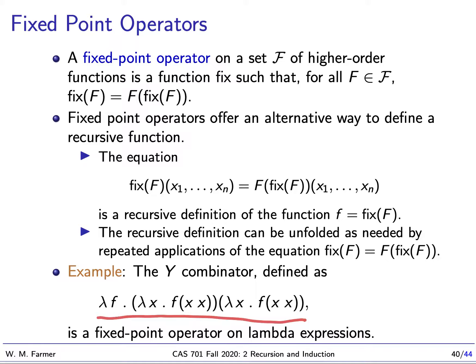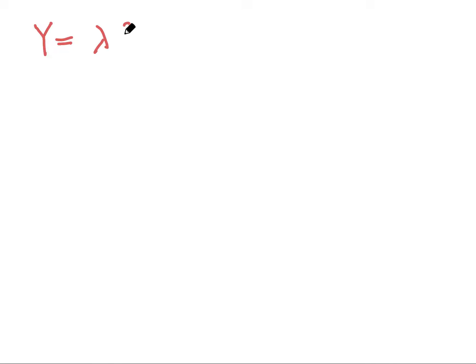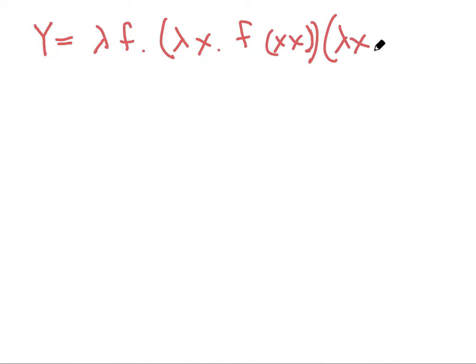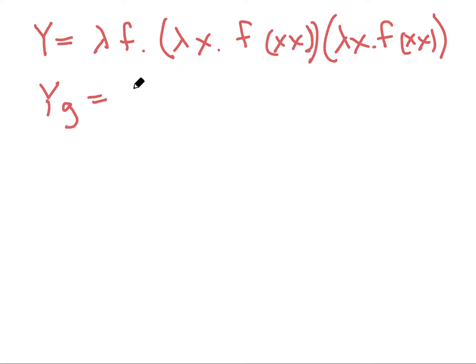Let's see why that is. Y equals lambda f. lambda x. f applied to (x x), and we have the same thing repeated again. That's Y. So if I apply Y to g, we're hoping this is going to give us a fixed point of g.